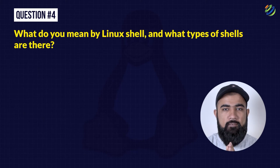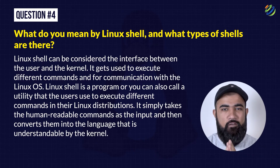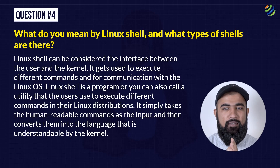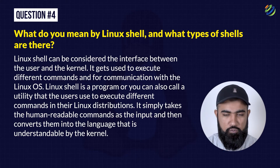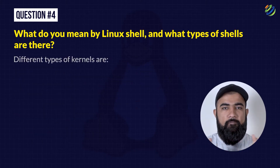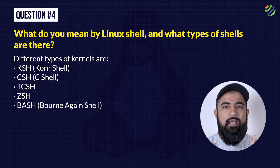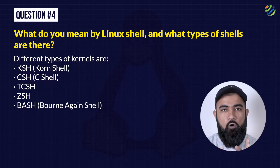Question 4: What do you mean by Linux Shell and what types of shells are there? Linux Shell can be considered as the interface between the user and the kernel. It gets used for the execution of different commands and for communication with the Linux operating system. It is a program or utility that the user uses to execute different commands in their Linux distribution. It simply takes a human-readable command as input and converts it into the language understandable by the kernel. The different types of shells include KSH (Korn Shell), CSH (C Shell), TCSH, ZSH, and Bash, also called the Born Again Shell.